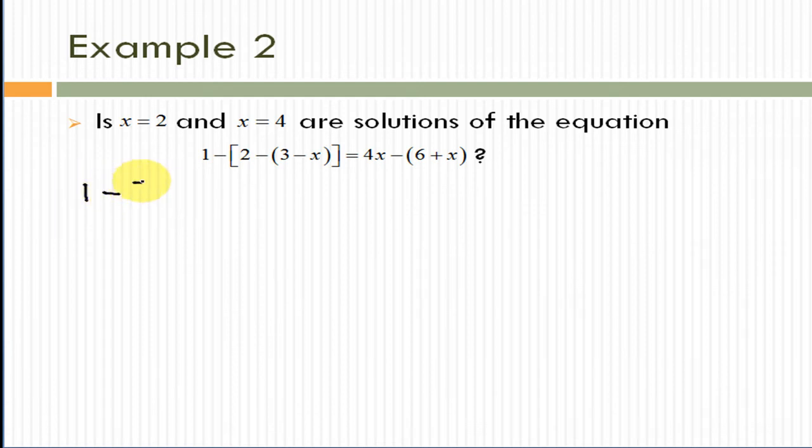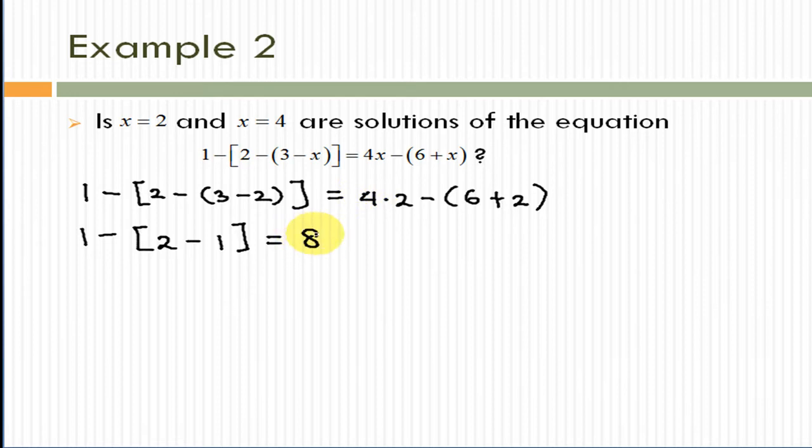Plug in x equal 2 to the left-hand side. We have 1 minus 2 minus 3 minus 2. The right-hand side equals 4 times 2 minus 6 plus 2. We can simplify from the inside first, from the expression inside the parenthesis. 2 minus 3 minus 2 is 1. 4 times 2 is 8. 6 plus 2 is 8. So the left-hand side is equal to 0 and the right-hand side is also equal to 0.